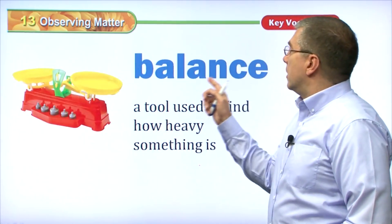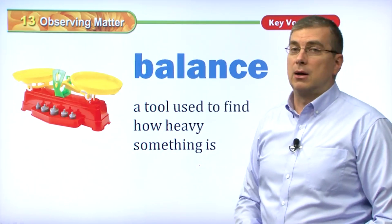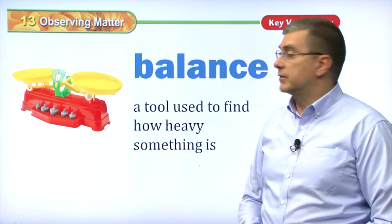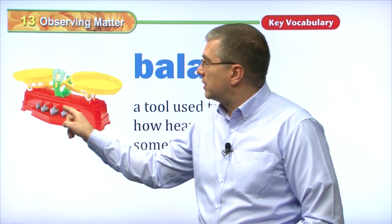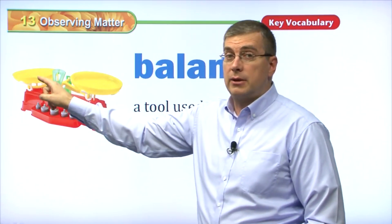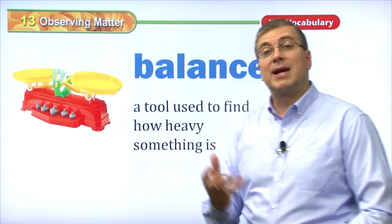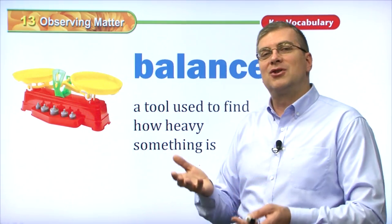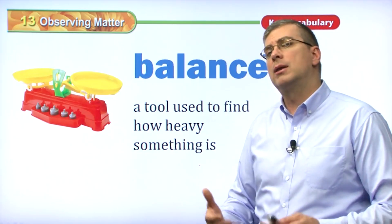Here we have another word. This is not an adjective — this is another way we can observe matter. It's a balance, a noun. It's a tool used to find how heavy something is. We put weights on one side and the object we want to weigh on the other side. Because we know how much the weights weigh, we can figure out how much something else weighs. So a balance is used to find out how heavy or how light something is.